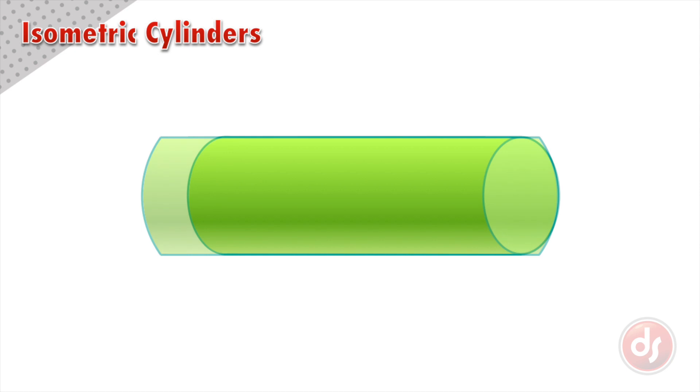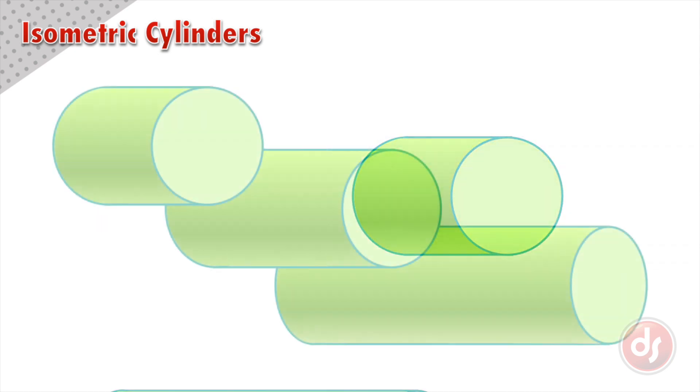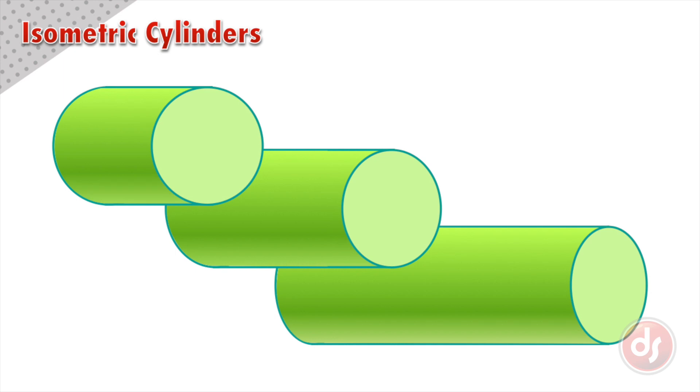If we take a cylinder and turn it in space, the ellipse will get wider as it faces us. If we look at the different stages as it turned, notice the length of the cylinder has gotten shorter as it has spun around.